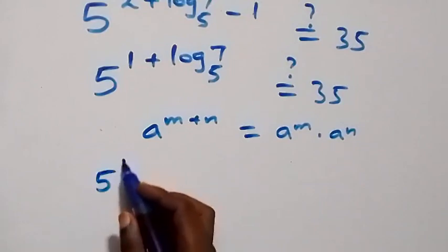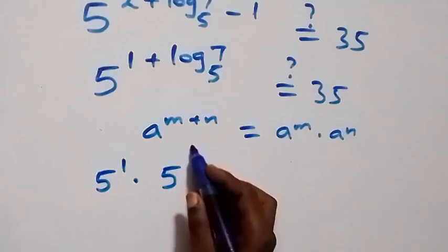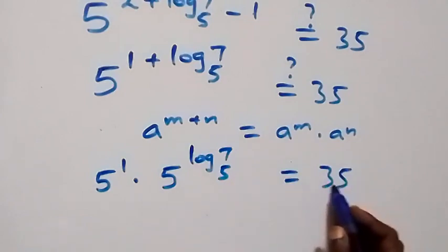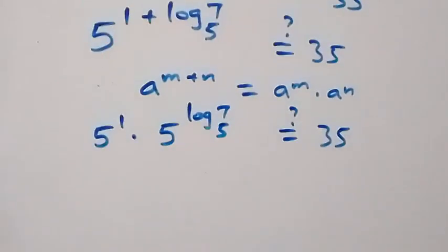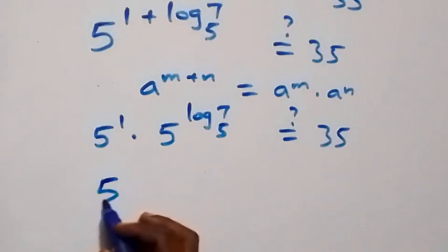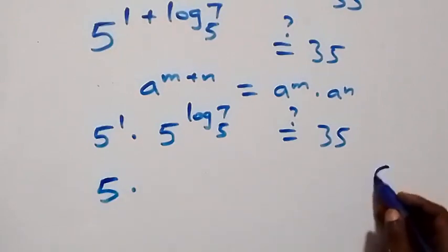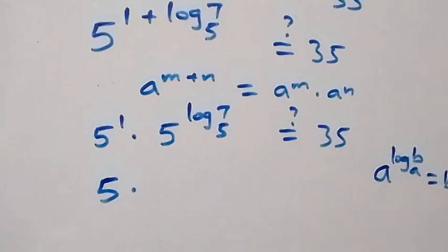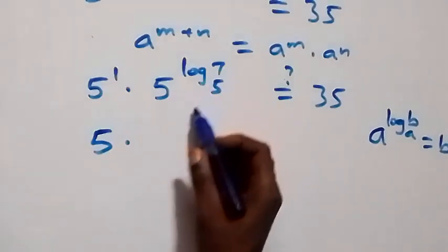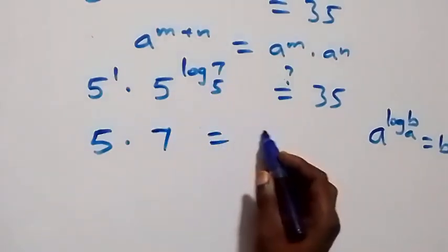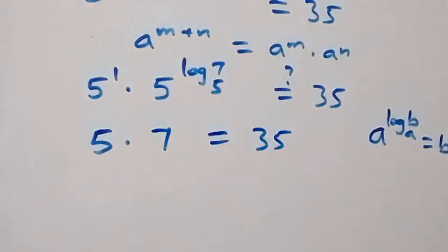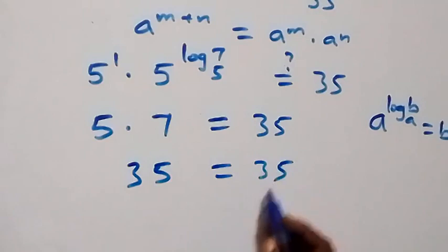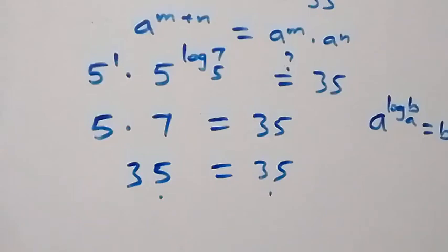Using the identity a raised to power log b to base a equals b, we get 5 raised to power 1 times 5 raised to power log 7 to base 5. This gives us 5 times 7, which equals 35. The left hand side equals the right hand side, confirming our answer.